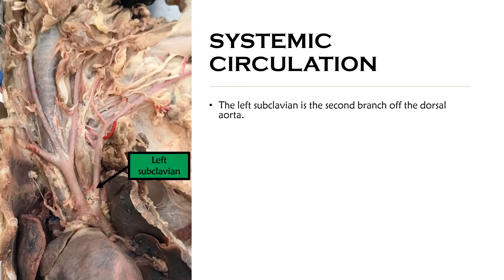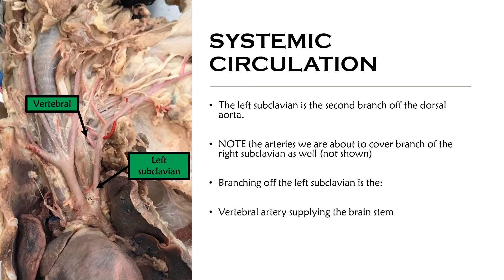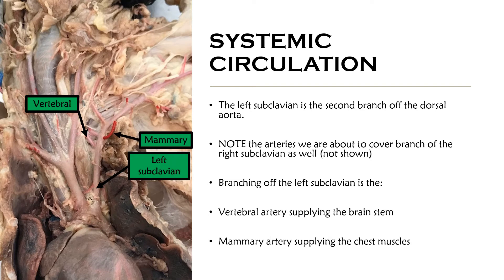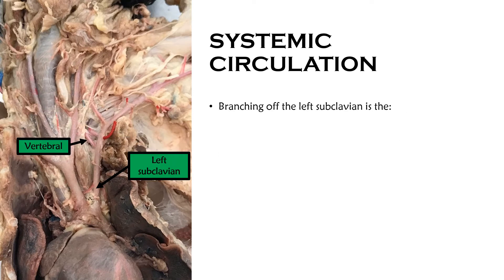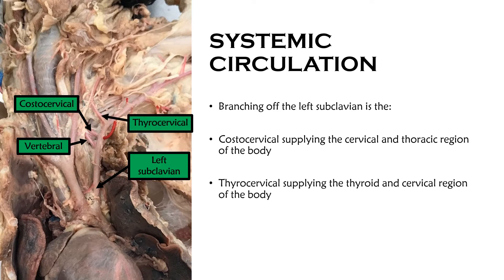The left subclavian is the second branch off the systemic arch. Note that the arteries we're about to cover also branch off the right subclavian — they're just not being shown. Branching off the left subclavian is the vertebral artery, supplying the brain stem, and the mammary artery, supplying the chest muscles. There is also the costocervical artery, supplying the cervical and thoracic region, and the thyrocervical artery, supplying the thyroid and cervical region.